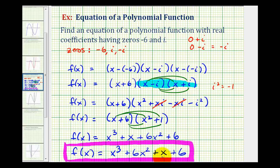This degree three or cubic function would be a polynomial function that has the given zeros. One thing we can do to verify this is to graph it. Remember if the zeros are real, they would be the x-intercepts of the graph. So if we graph this, even though we have three zeros, we should only have one x-intercept, x equals negative six.